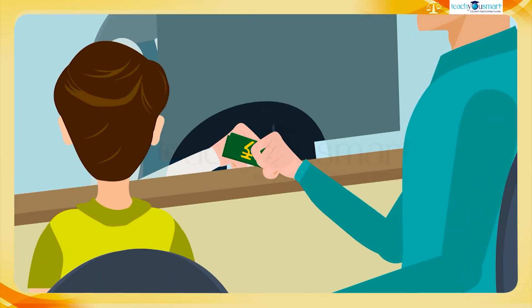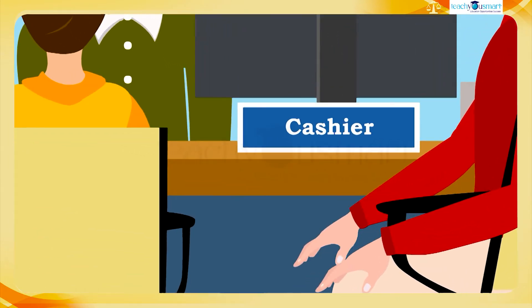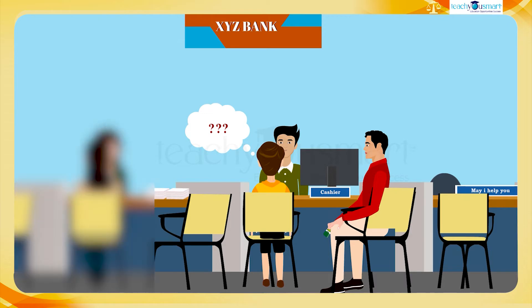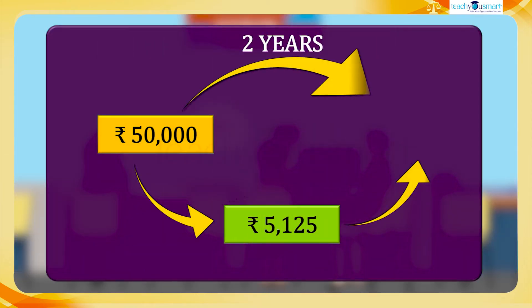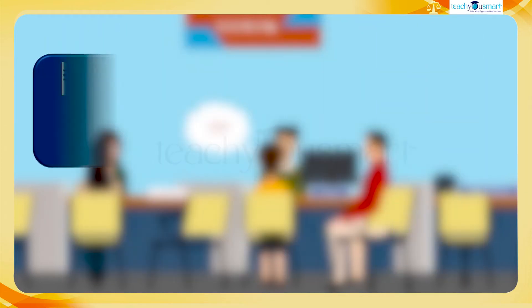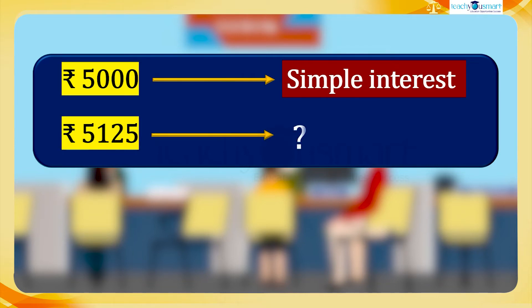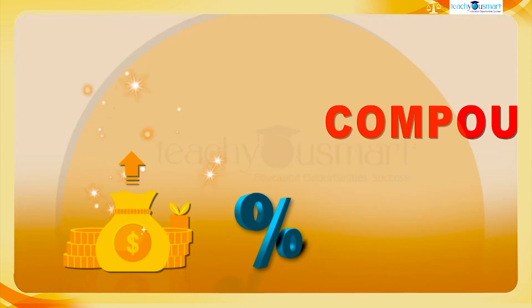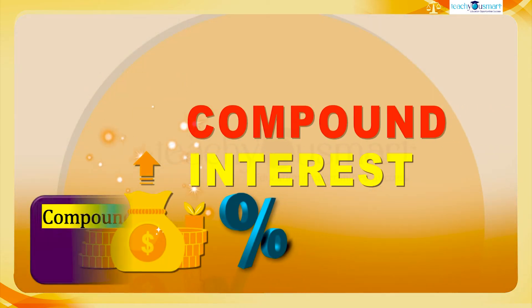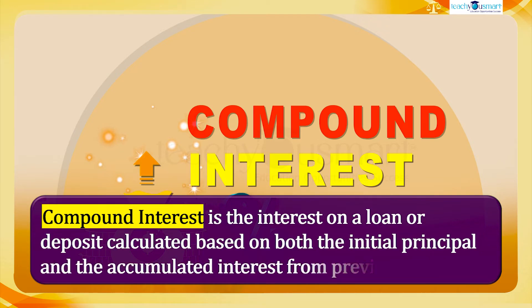At the same time, Rohat's father deposited the same amount — 50,000 rupees — in the bank for two years at the same rate of interest of five percent, and he got back 55,125 rupees. There was an additional amount of 5,125 rupees. Rohat's mother got 5,000 rupees as simple interest, but his father got 5,125 rupees, calculated as compound interest — the interest on a loan or deposit calculated based on both the initial principal and the accumulated interest from previous periods.